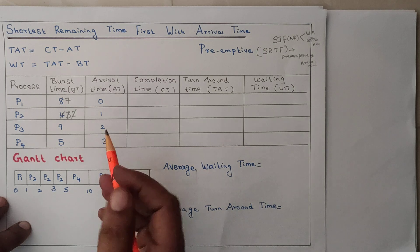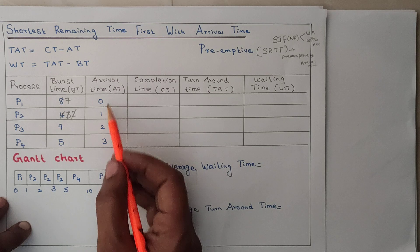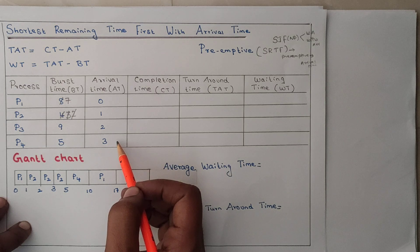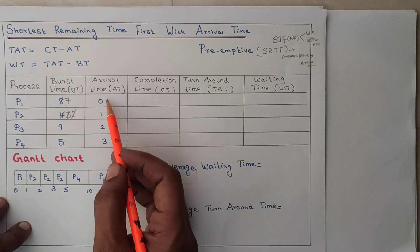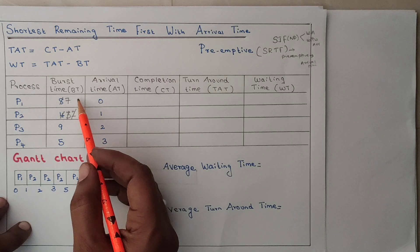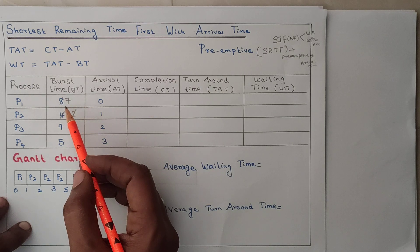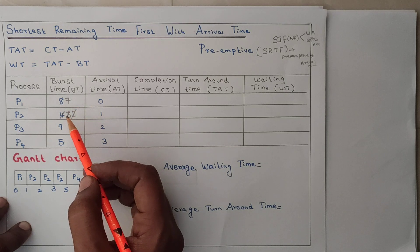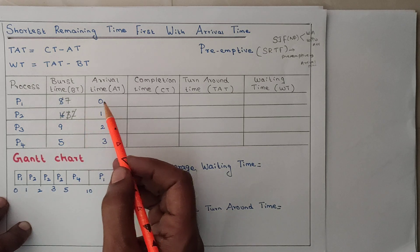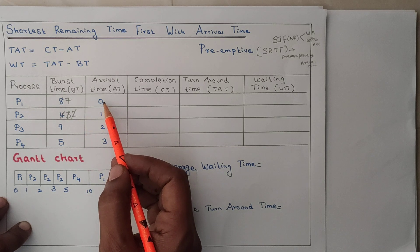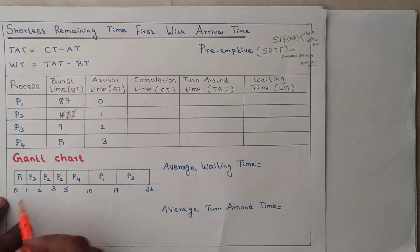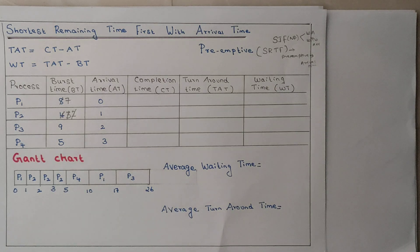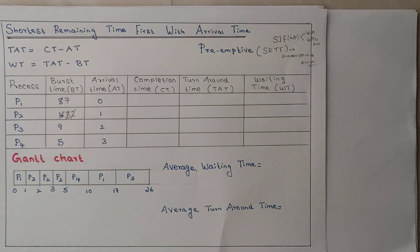You may have one doubt: suppose P1 and P2 both arrive at 0 milliseconds, P3 at 1ms, P4 at 2ms. If two processes have the same arrival time, check which burst time is smaller. If P1's burst time is smaller than P2's, P1 gets executed; if larger, P2 gets executed. So arrival time is the entry point, and based on arrival time you draw the Gantt chart — this is very important.